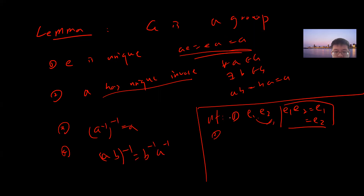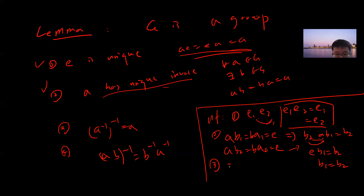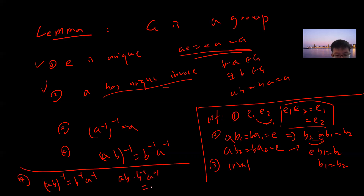For uniqueness of inverses: suppose a has two inverses b1 and b2, so ab1 = b1a = e and ab2 = b2a = e. Then b2·(ab1) = b2·e = b2, but also b2·(ab1) = (b2·a)·b1 = e·b1 = b1, so b1 = b2. Also: (a⁻¹)⁻¹ = a (trivial, check yourself), and (ab)⁻¹ = b⁻¹a⁻¹, since (ab)(b⁻¹a⁻¹) = e by cancellation.